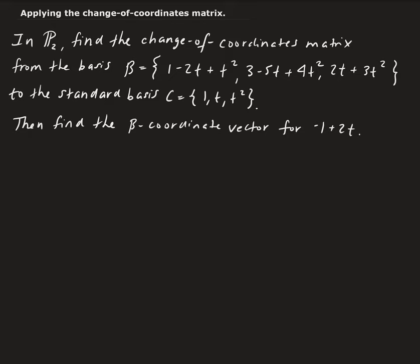First, let's create our augmented matrix. We're going to convert from beta to C, so that means I want to put the corresponding vectors for C on the left-hand side. Using the isomorphism property, for the first polynomial in C, we're going to have one, then zero, then zero.